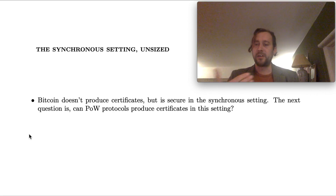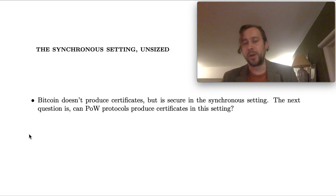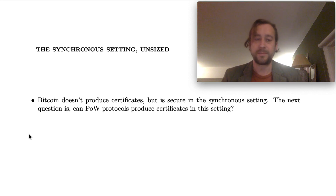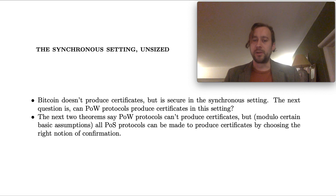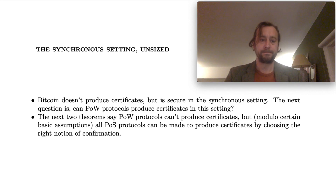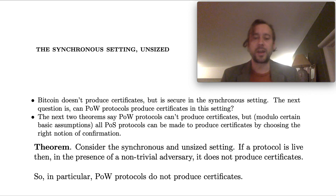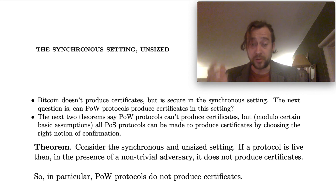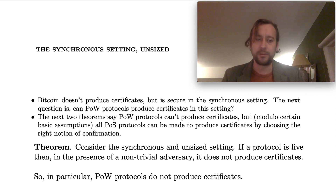Now let's move on to the synchronous setting, where message delivery is reliable and we have a known upper bound on delivery time. We know that Bitcoin doesn't produce certificates, but it is secure in the synchronous setting. The next question is: can proof-of-stake protocols produce certificates in this setting? The next two theorems address this. First, consider the synchronous and unsized setting: if a protocol is live, then in the presence of a non-trivial adversary — one with some non-zero resource balance — it does not produce certificates. In particular, proof-of-work protocols do not produce certificates.